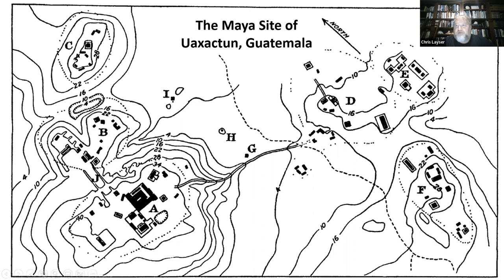For those new to the topic of Maya E-groups and wondering where the term came from — it came from the type site of Washaktun. Every archaeological site groups its architectural assemblages and gives them group names, like group A, group B, group C, then group D, group E, and group F. The name E-groups comes from the group E at Washaktun.